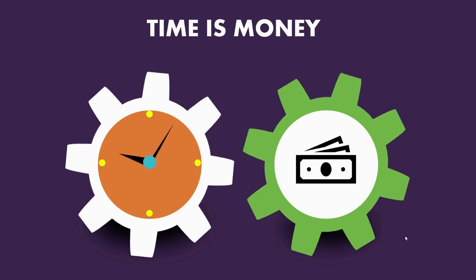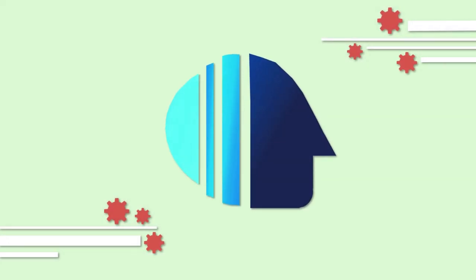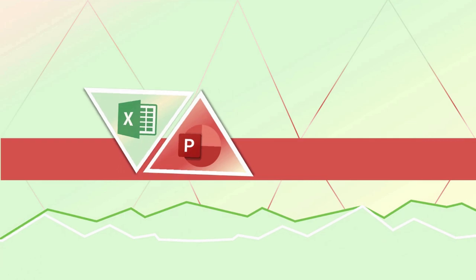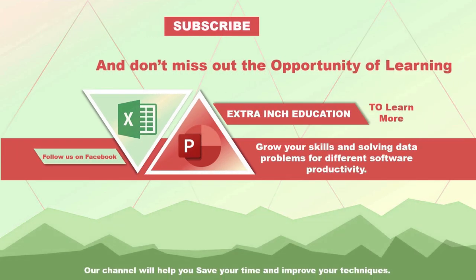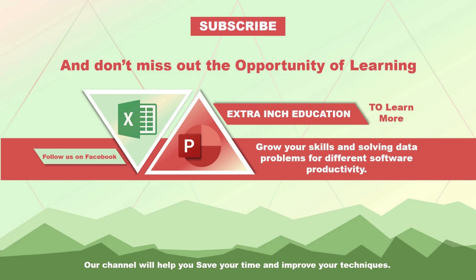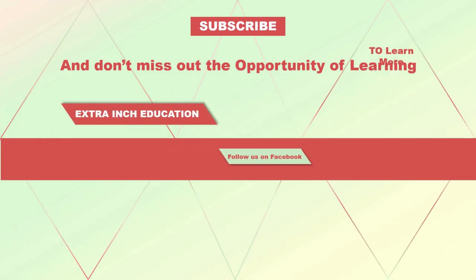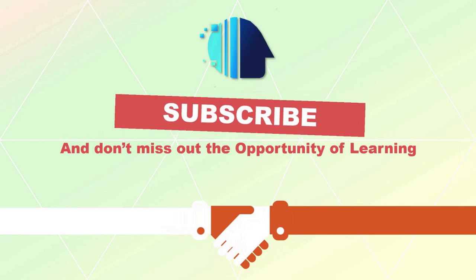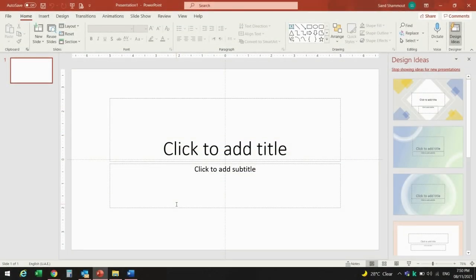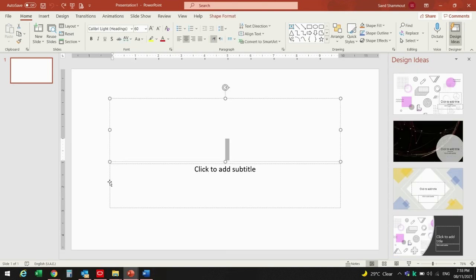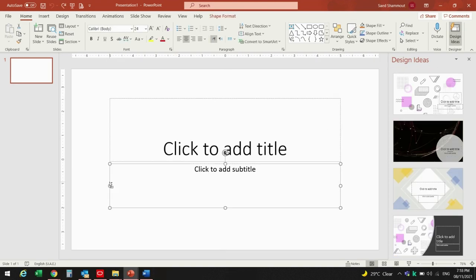In today's tutorial, I'm going to show you how to create an animated gear including a rotating clock. So let's start. First thing to do is to press Ctrl+A and delete everything on the sheet.